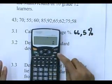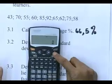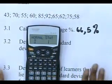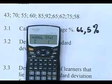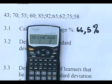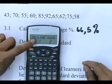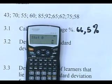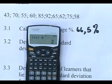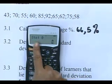On the Sharp calculator, the first step is to press Mode. You'll see there is Normal and Stat — we are doing statistics, so you press 1. Then you see SD, which means standard deviation, and the 0 is flickering, so you press 0. On your screen you should now have Stat 0.